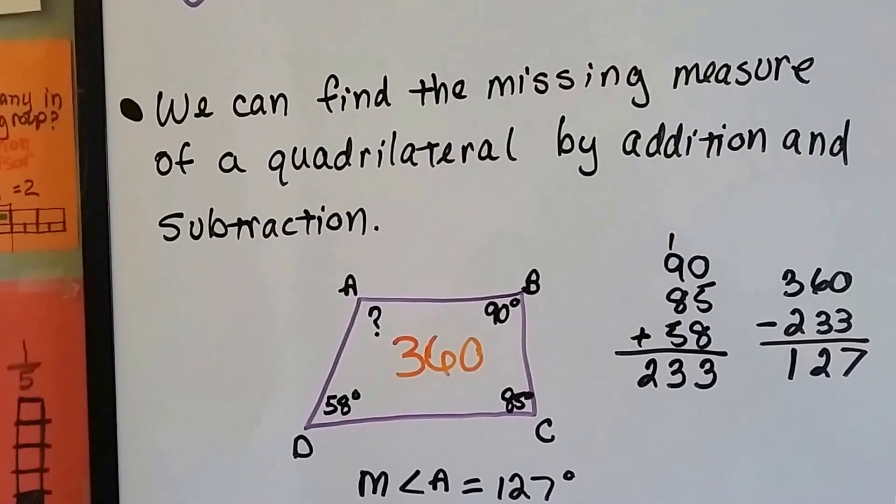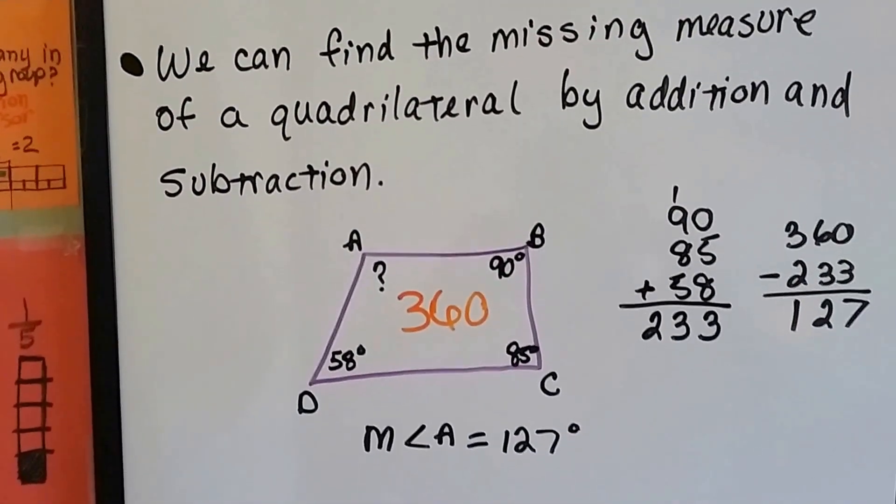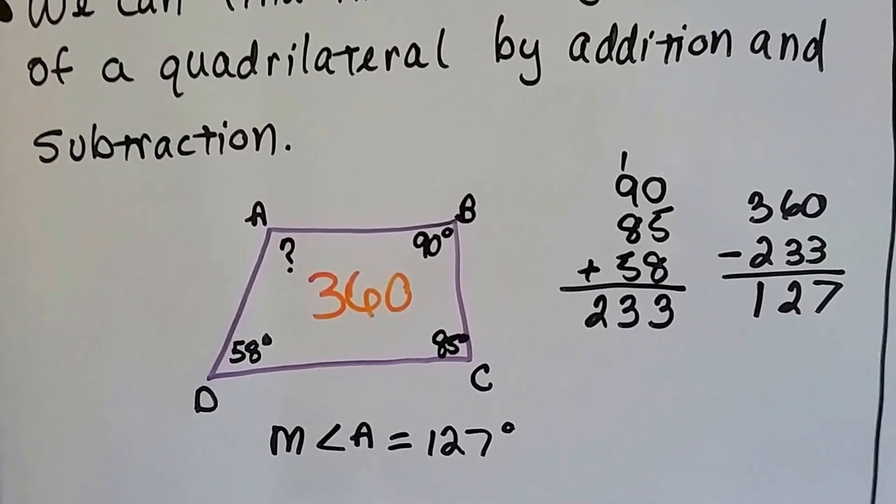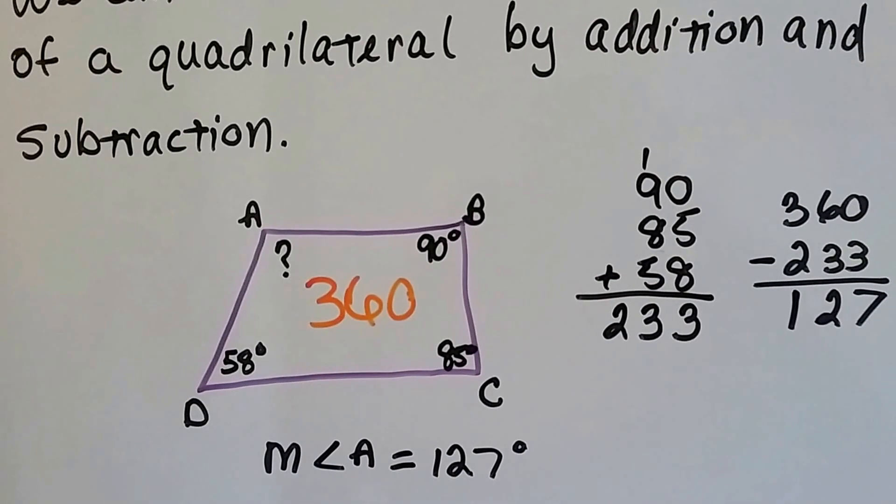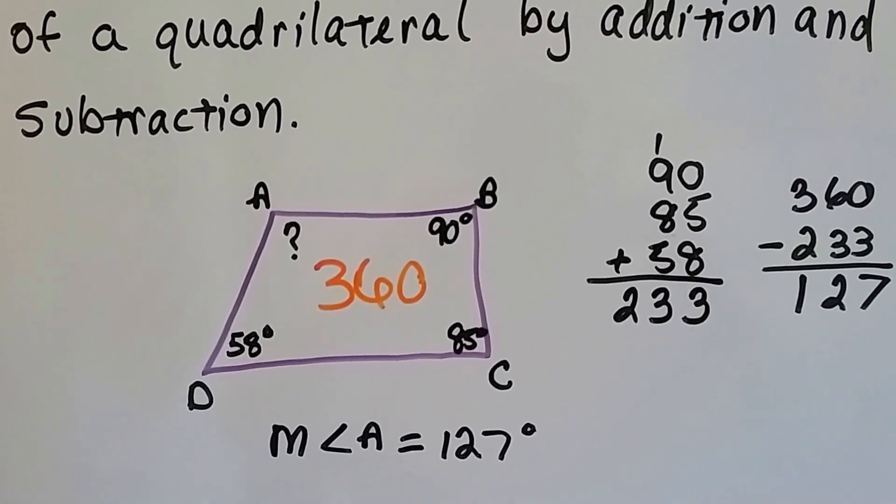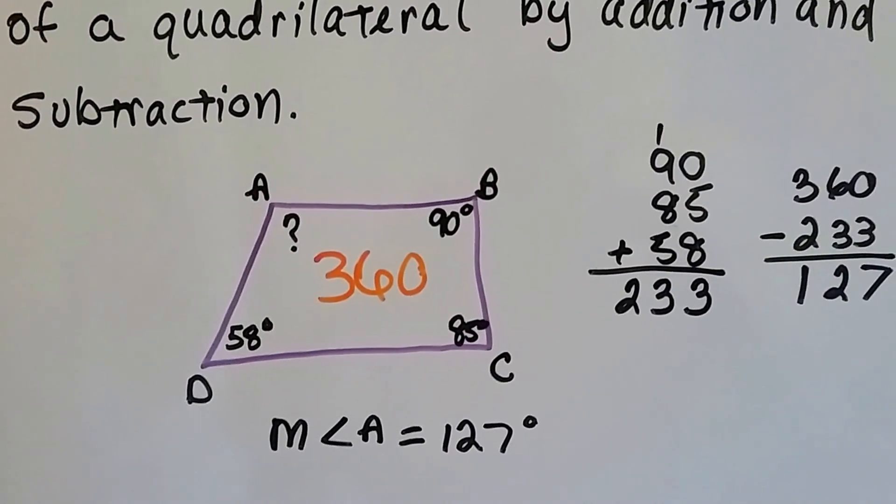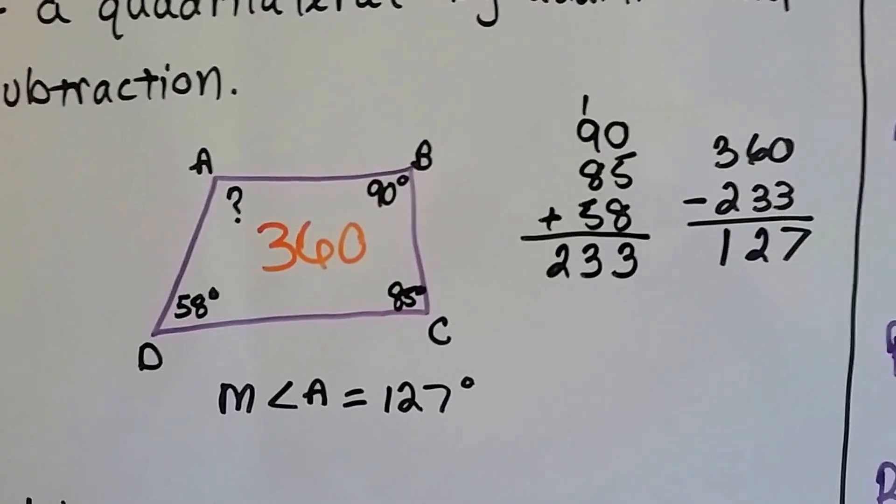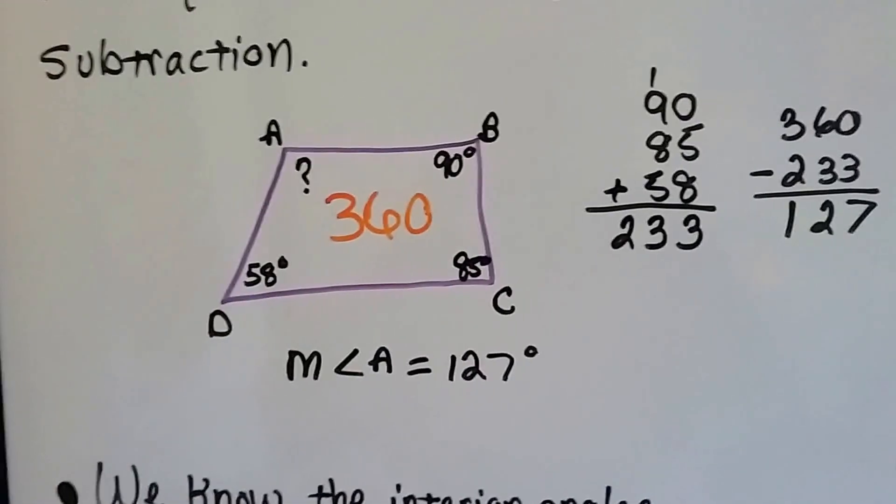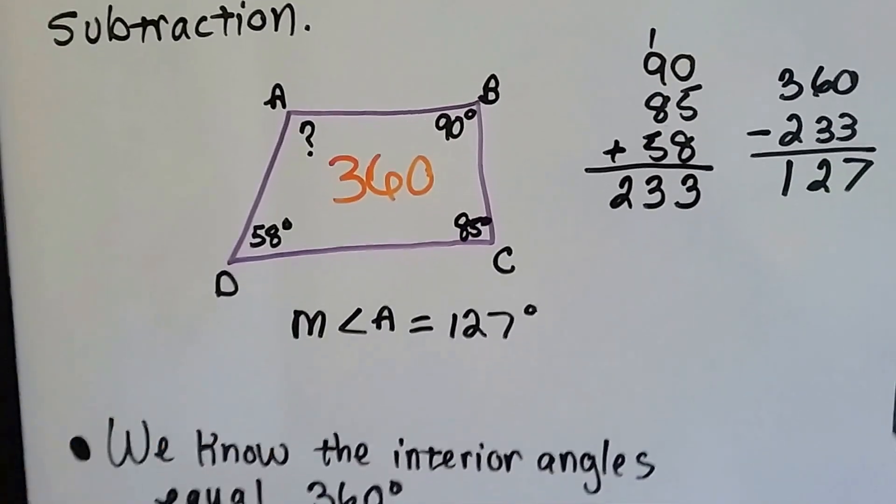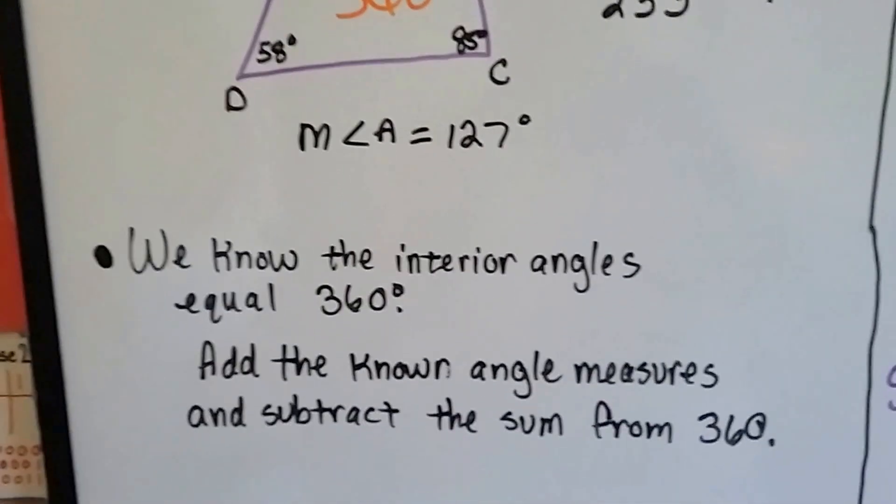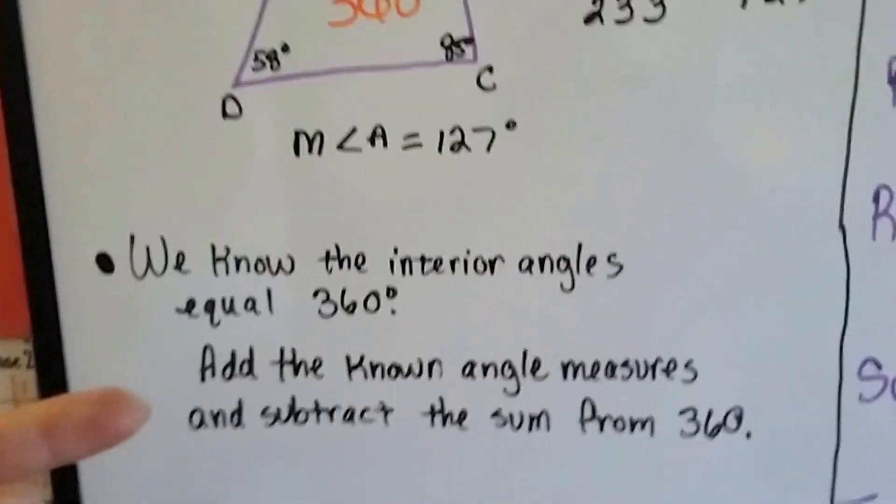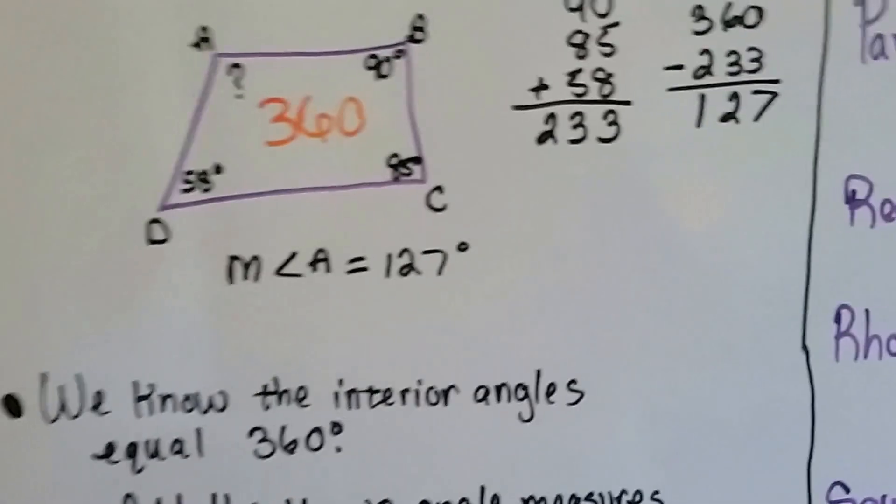So we can find the missing measure of a quadrilateral by addition and subtraction. We know the inside has got to be 360. So we can add together the 90 degree corner angle of B, the 85 degree angle of angle C, and the 58 degree angle of angle D, and total them all up together. And then take the total and subtract it from 360, and whatever's left over is the measure of angle A. See? We know the interior angles equal 360 degrees, so we just add the known angle measures and subtract from the 360, and we've got the measure.